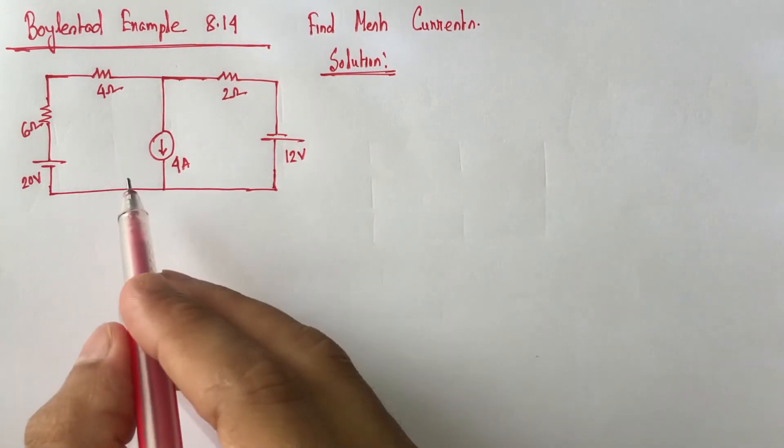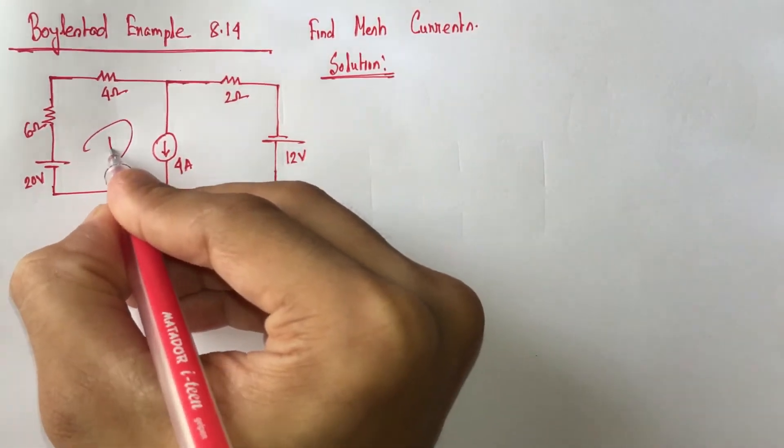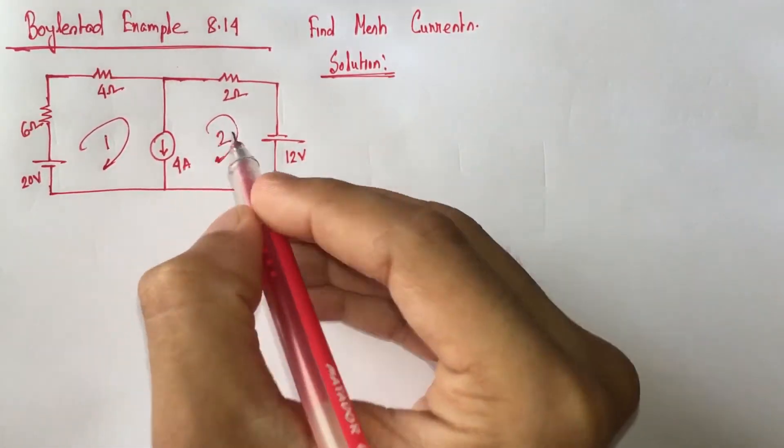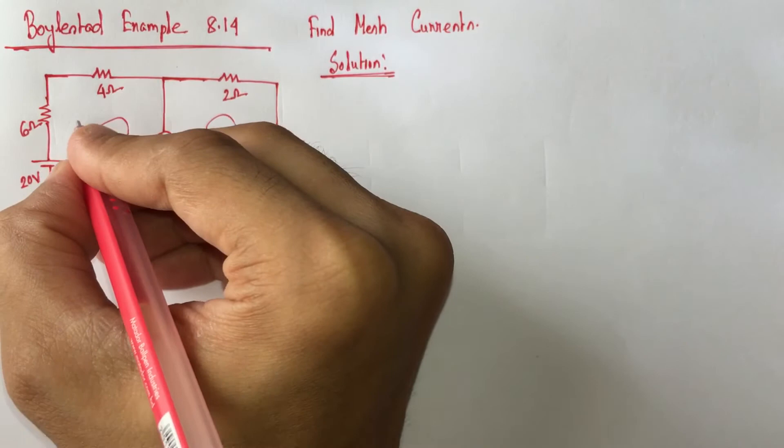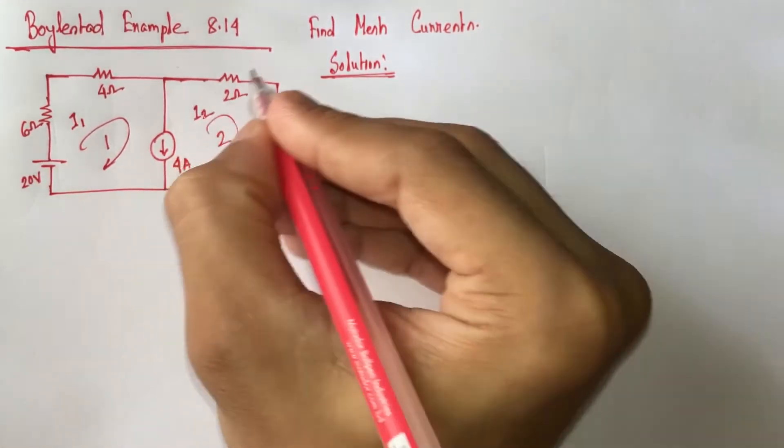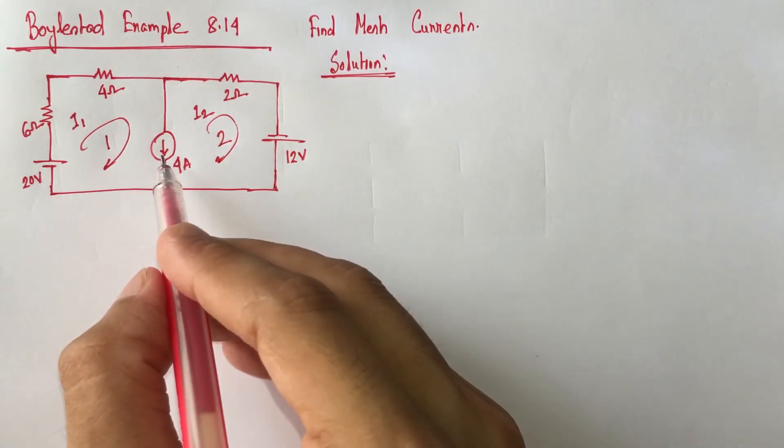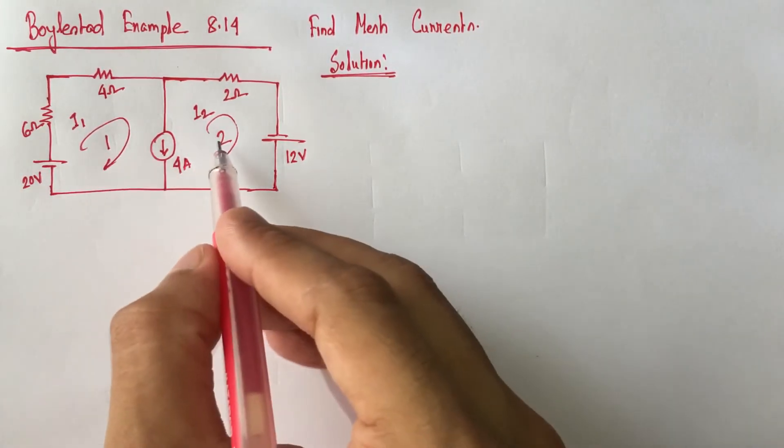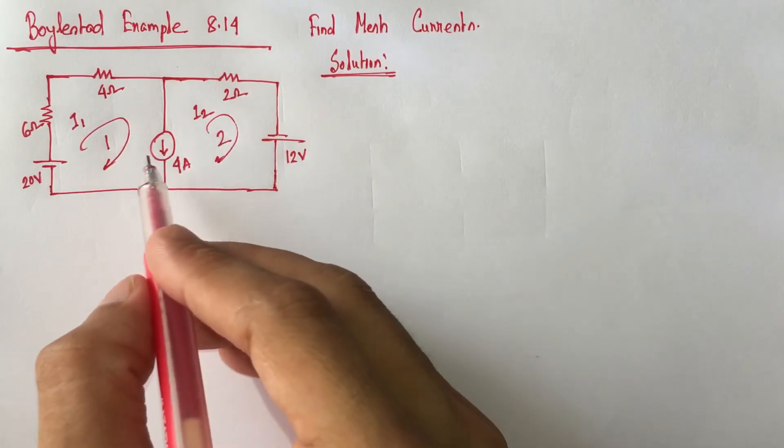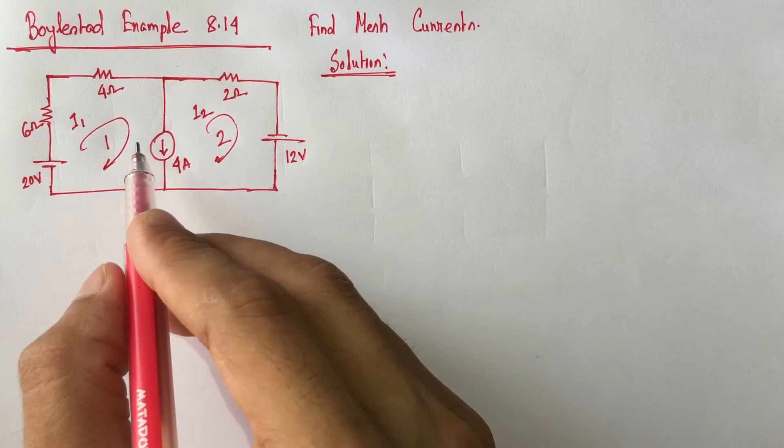For the circuit, let this be loop 1 and this be loop 2. Let the current of loop 1 be i1 and the current of loop 2 be i2. From the circuit we see that the 4 ampere current source is common between loop 1 and loop 2, so this is a super mesh circuit.